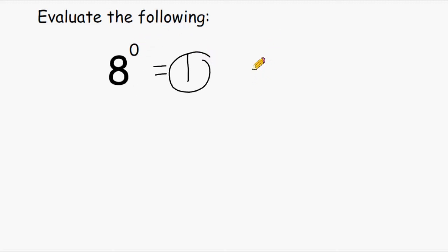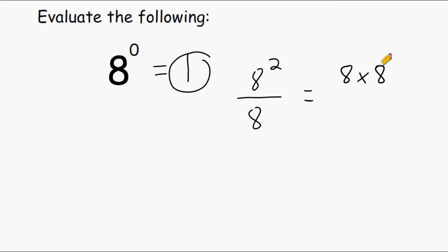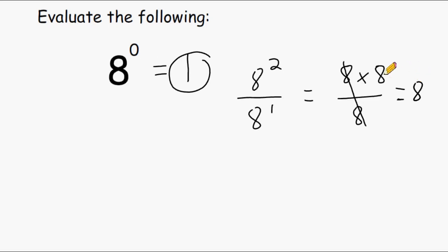Here's the reason for that. Let's say you had 8 to the second power over just 8. That would give us 8 times 8 on the top divided by 8 on the bottom — so really 8 to the first power on the bottom. If we cancel out a pair of 8s, we have one 8 remaining. We could have gotten that by subtracting the exponents: 2 minus 1 is 1, so the answer is 8 to the first power.